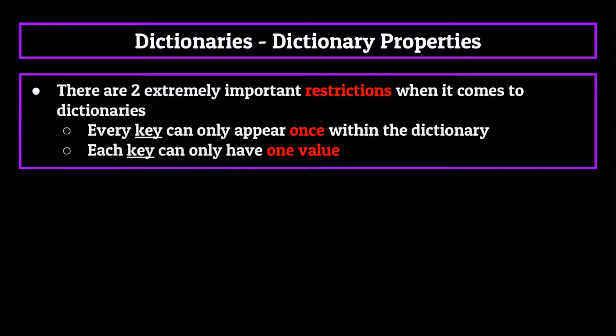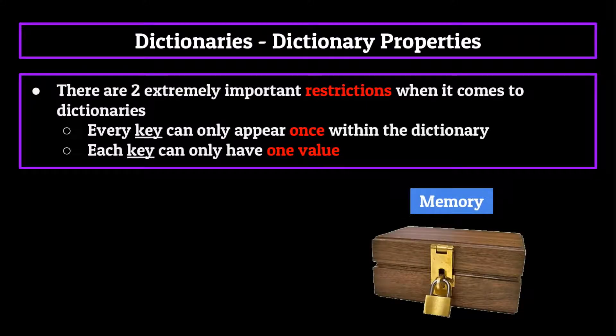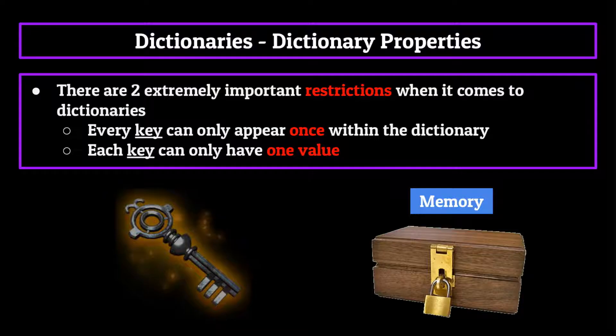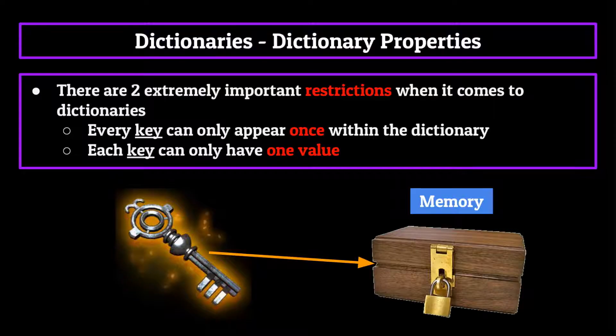Think of it like this: when you create a key value pair, the computer creates a little locked box in memory to store the value in your key value pair. Then the computer spends days and weeks creating a customized handcrafted one of a kind key that corresponds directly to that locked box. This key cannot be replicated in the slightest. And that's the mindset that you should use when working with dictionaries. No two keys can be the same.